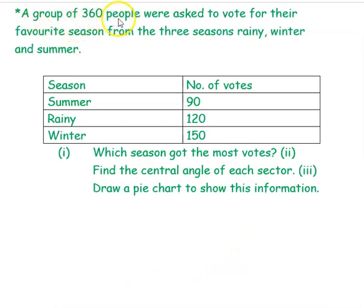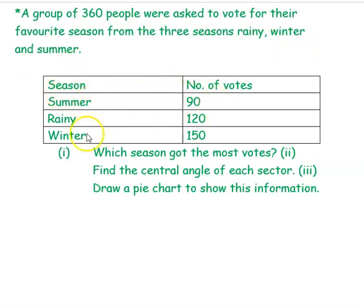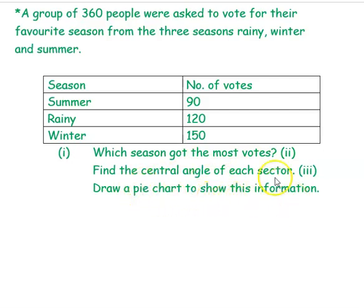The next question: a group of 360 people were asked to vote for their favorite season from three seasons — rainy, winter, and summer. The table gives: summer — 90 votes, rainy — 120 votes, winter — 150 votes. The questions asked are: which season got the most votes? Find the central angle of each sector. Draw a pie chart to show this information.